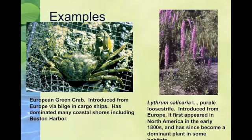Another example is purple loosestrife, which people don't realize is actually an invasive species because you see it everywhere. It first appeared in the 1800s, so it has become a very dominant plant and is technically an invasive species, but because it is around so much, most people don't realize. That one also came from Europe.